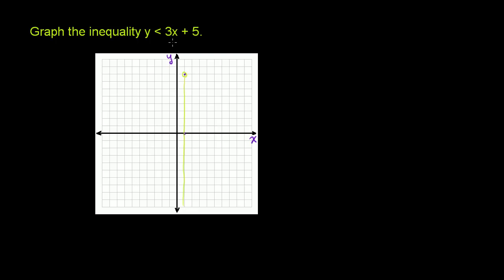Now, if we kept doing that, we would essentially just graph the line of y is equal to 3x plus 5. But we wouldn't include it. We would just include everything below it, just like we did right here.